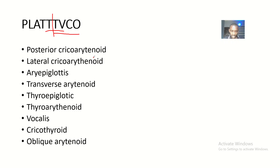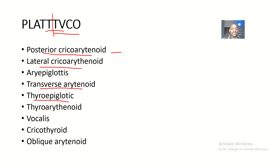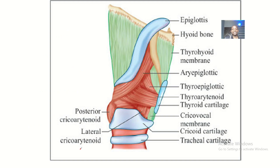In PLAT VICO: P stands for Posterior Cricoarytenoid muscle. L stands for Lateral Cricoarytenoid. A stands for Aryepiglottic. The first T stands for Transverse Arytenoid. The second T stands for Thyroepiglottic. The last T stands for Thyroarytenoid. V stands for Vocalis. C stands for Cricothyroid. O stands for Oblique Arytenoid muscle.